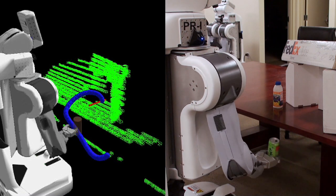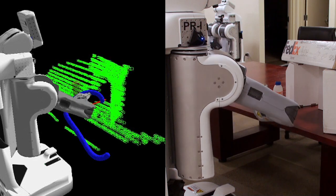We developed a new motion planner called STOMP, which stands for Stochastic Trajectory Optimization for Motion Planning. In the video, you'll see the PR2 using this planner as part of the grasping pipeline.